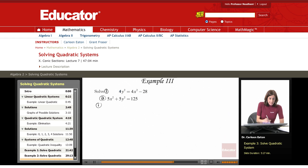I'm going to take the first equation, and first I will just rewrite it so that it's in more of a standard form. So I'm going to subtract 4x squared from both sides. So it's negative 4x squared plus 4y squared equals negative 28. This is still equation 1.